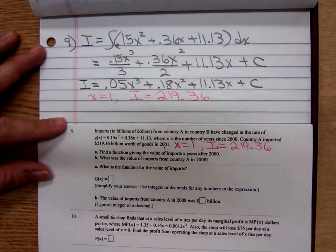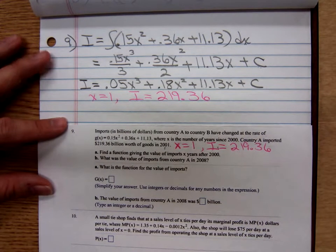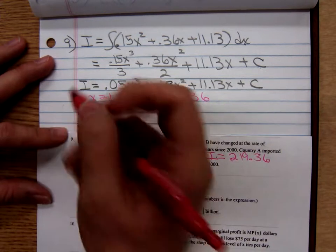Oh, this isn't going to be as bad as I thought. Plug in 219.36 for I, plug in 1 for x.